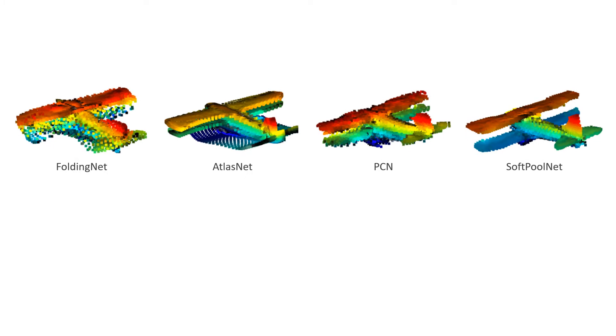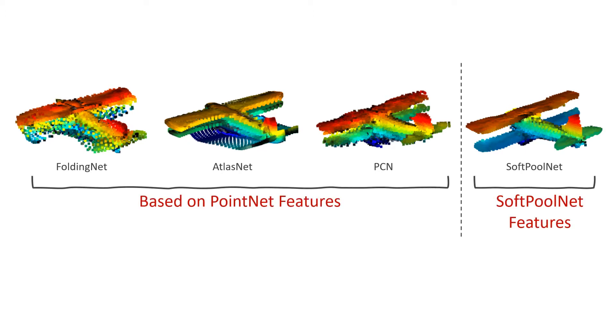What is common across all these methods is that all of them rely on an encoder-decoder architecture. But what makes us different is that while the other three methods use PointNet features, our method relies on the SoftPoolNet features. So, what is SoftPoolNet?